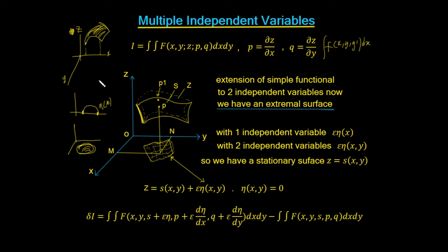Take your time and work through that. All we're doing is taking the original derivations of the Euler-Lagrange equation for one independent variable x and extending it to two independent variables. Instead of having an extremal line, we're going to have an extremal surface. Instead of adding on a function eta of x, we're going to add on a function eta(x, y), which is a surface. And that's going to give us our variation.